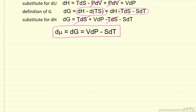For a single component, as pressure increases the chemical potential increases, because volume is a positive number. As temperature increases, the chemical potential decreases, because absolute entropy is also a positive number.